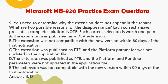A. The extension was published as a dev extension. B. The extension was not compatible with the new version within 60 days of the first notification. C. The extension was published as private and the platform parameter was not updated in the application file. D. The extension was published as private and the platform and runtime parameters were not updated in the application file. E. The extension was not compatible with the new version within 90 days of the first notification.